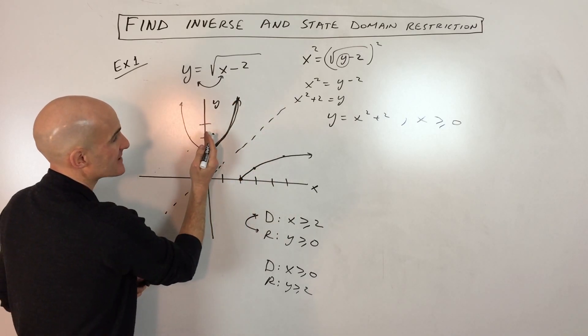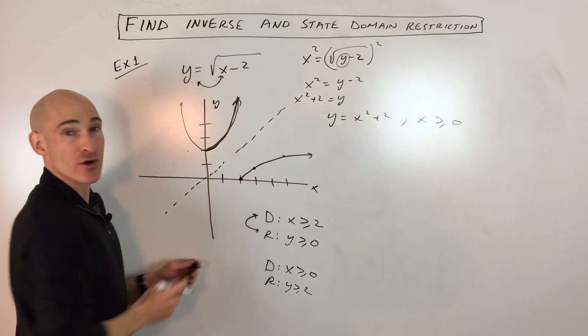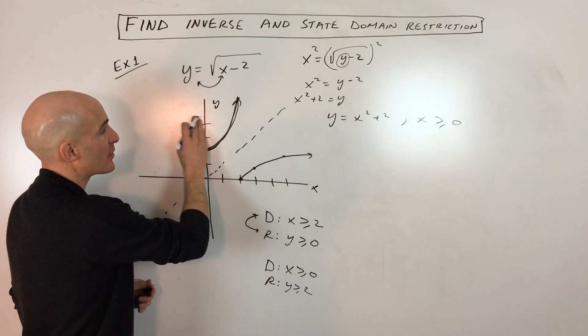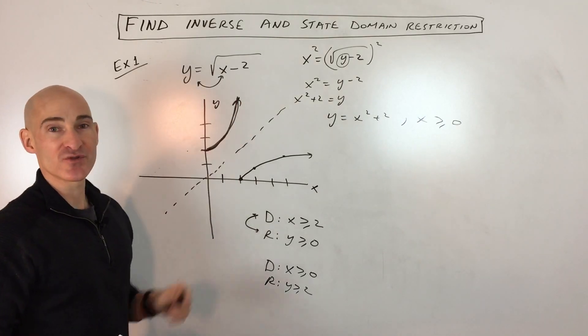And that's the part where x is greater than or equal to 0. We don't want this branch over here. So I'm going to erase this portion. That's not our inverse graph. We just want that piece right there.